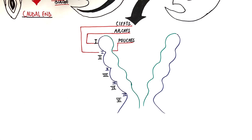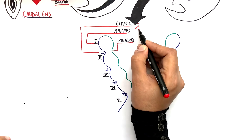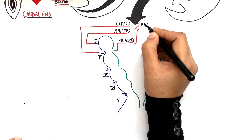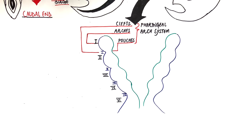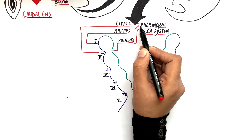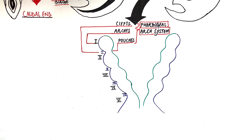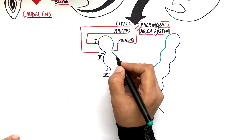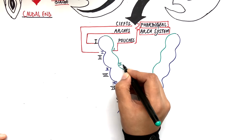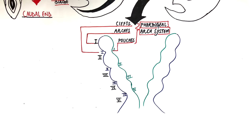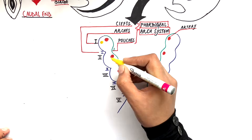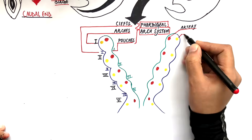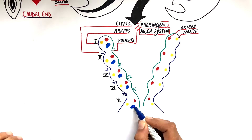Together, the pharyngeal arches, the pharyngeal clefts and the pharyngeal pouches make up the pharyngeal arch system, and each constituent of the pharyngeal arch system will give rise to different structures of the head and neck. Each arch at its central core is fitted by an artery, a nerve and a cartilage.